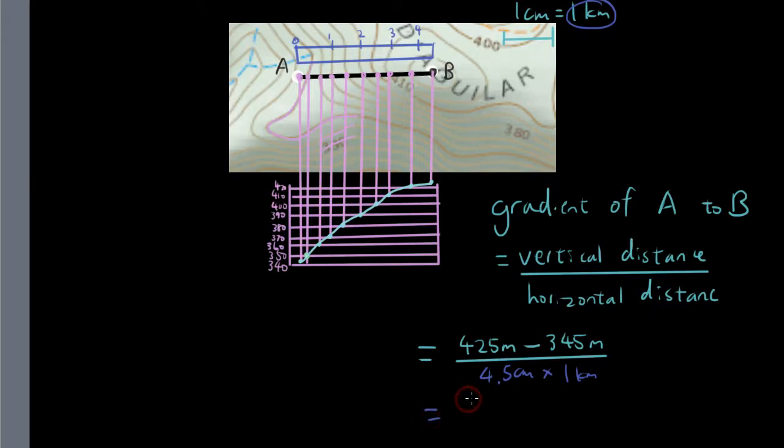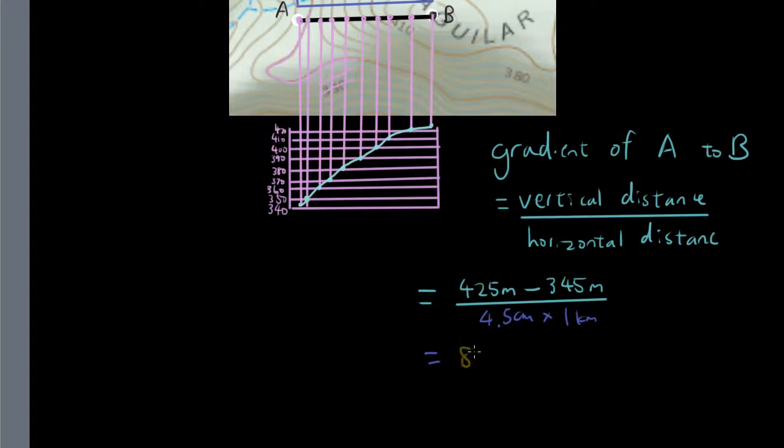So then you got 425 meters minus 345 meters, so you have 80 meters at the top. In the bottom is 4.5 kilometers, so that is 4,500 meters. So you got 80 divided by 4,500 and that is 0.0177 and that is the gradient. The steeper it is, the bigger this number is.